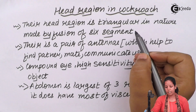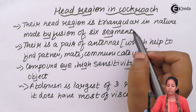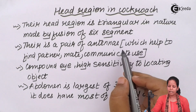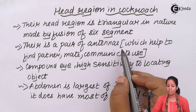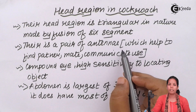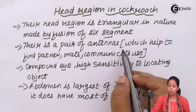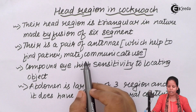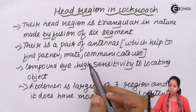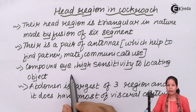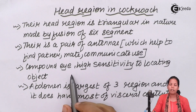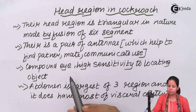The head region, being triangular in nature, is made by the fusion of six different segments. There is also a pair of antennae present in every cockroach, and this pair of antennae helps them to find their partners or mates — basically, the insect can communicate with the help of these antennae. The presence of compound eyes makes vision very clear, distinctive, and sensitive, helping them to locate objects present at far different locations.